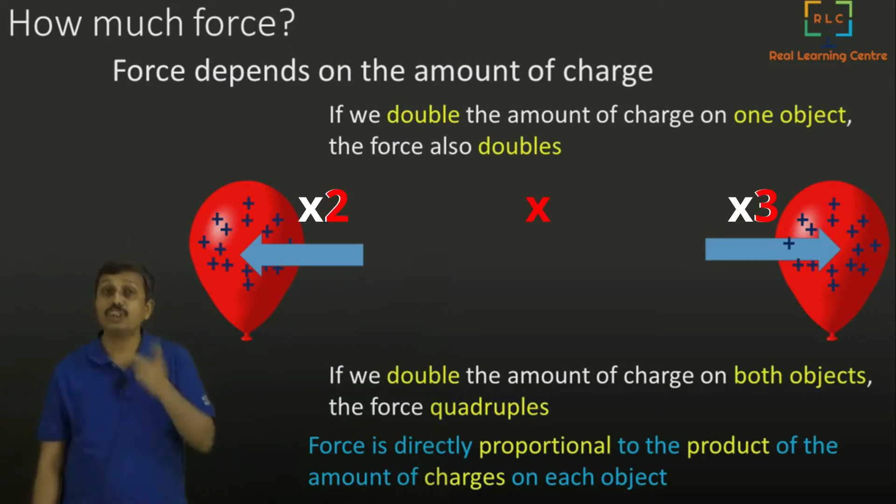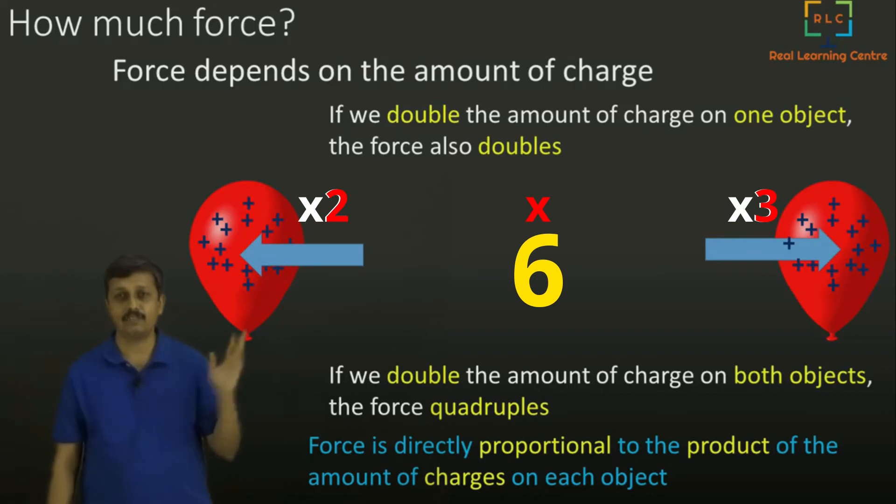Then what happened? Two into three. Do the product. Six times. The force becomes six times. So it always becomes the product of the two charges. So that we have seen from this experiment.